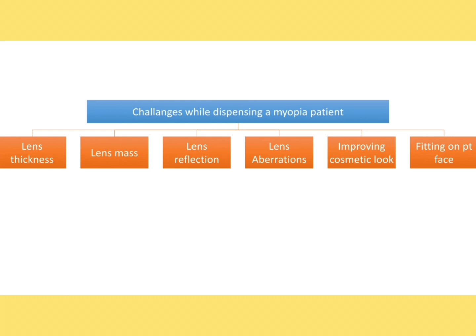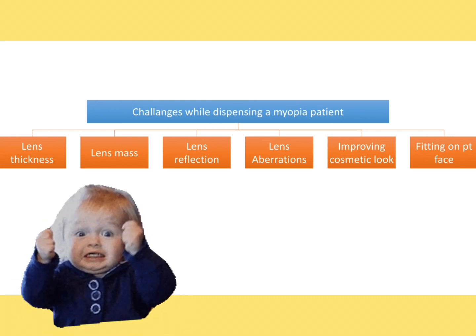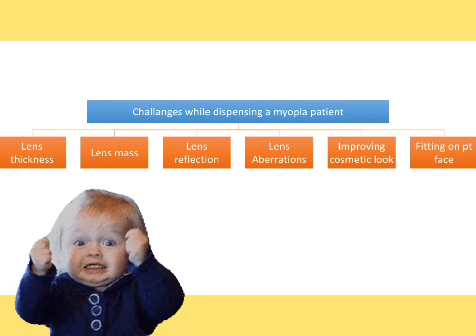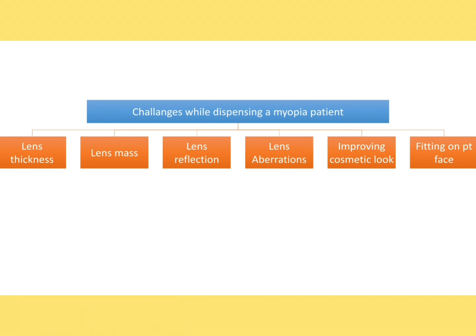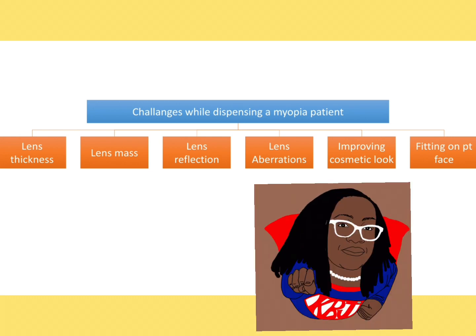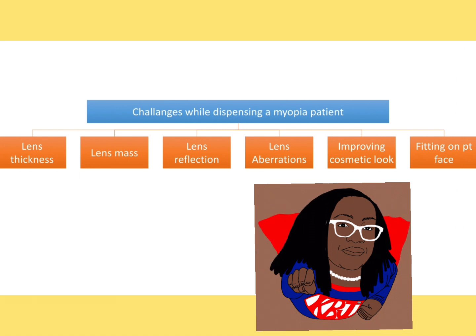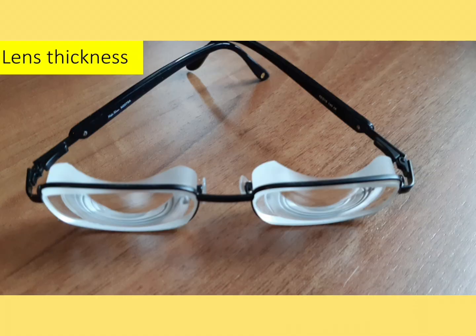These are the challenges you will face when dispensing lenses to a myopic patient: first, reduce the lens thickness; second, reduce the lens weight; third, reduce the lens reflection; fourth, reduce the lens aberration; fifth, improve the cosmetic look; and sixth, make sure the lens is fitting perfectly on the patient's face. All these things you need to keep in mind while dispensing glasses to a myopic patient.